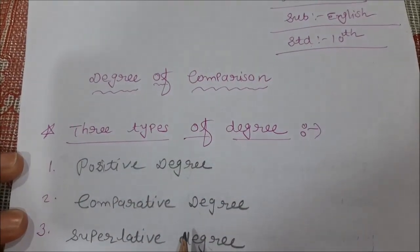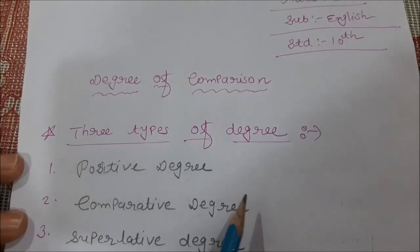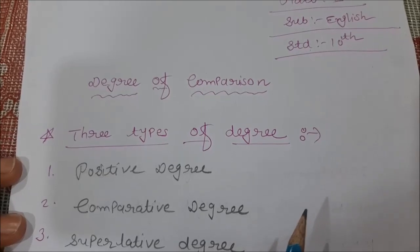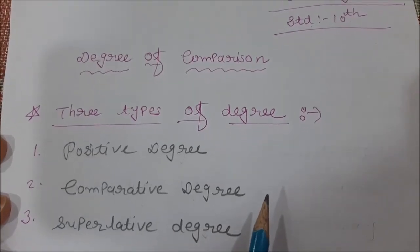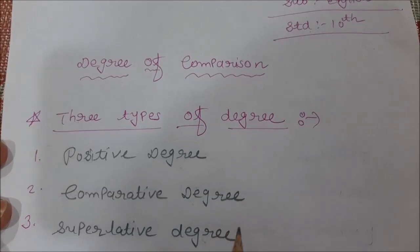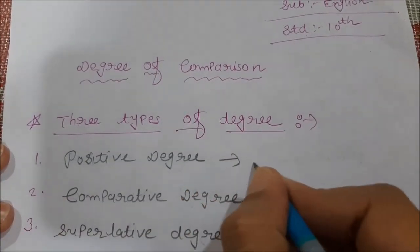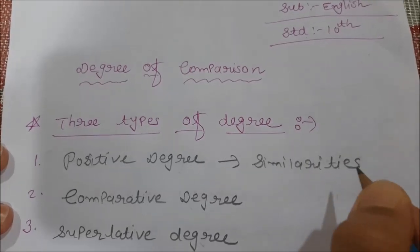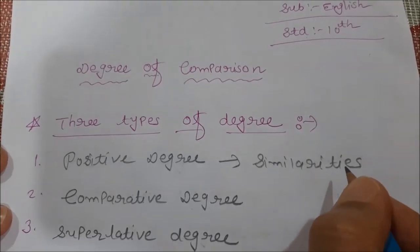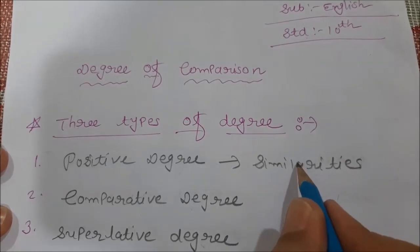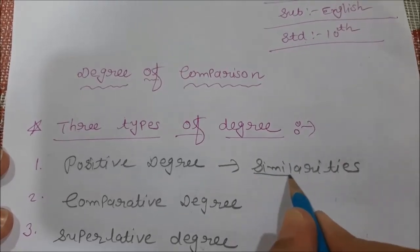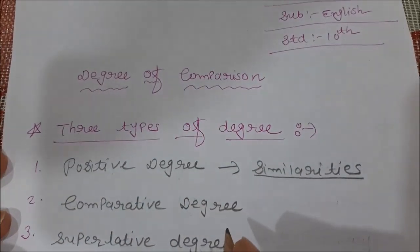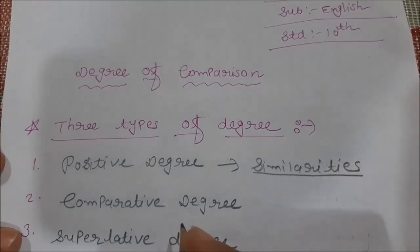Don't be confused. Don't mix up the rules of active-passive with degree or indirect speech. Just remember each rule of each grammar topic separately, then you will easily remember. Positive degree is useful to show similarities between two persons and two things. Keep in mind: similarities — both have the same thing.